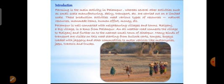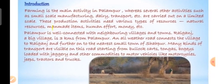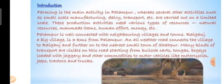This is the introductory page. It tells us that the main occupation of the people living in Palampur is farming, but some people are also engaged in other economic activities like small-scale manufacturing, dairy, transport, and more. These production activities need various types of resources like natural resources, man-made resources, human effort, and money.